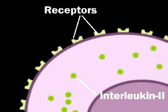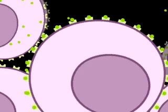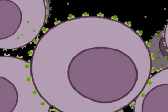IL-2 triggers helper T cells to divide. The daughter cells respond to interleukin-2 by producing a clone of cells identical to the first T cell in genetic makeup and immunologic specificity. Production of this clone completes the activation phase of the humoral immune response.